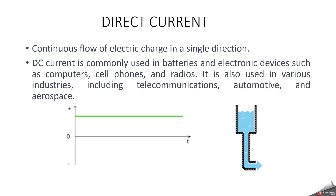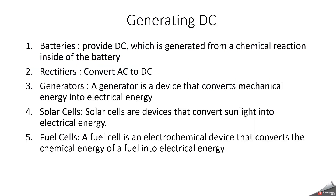DC provides a constant voltage or current. Now we can see about what other ways we can generate DC. DC means direct current — it is a type of electric current that flows in one direction and maintains a constant voltage. There are multiple ways to generate a DC current.